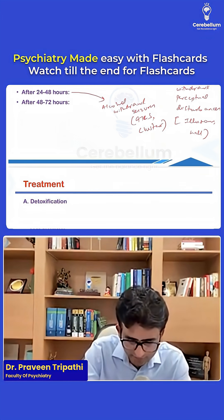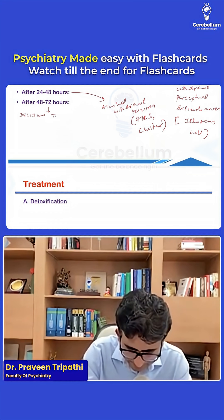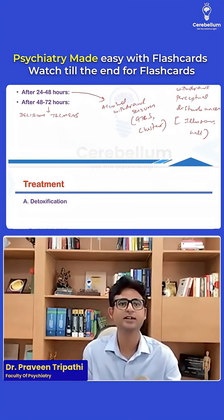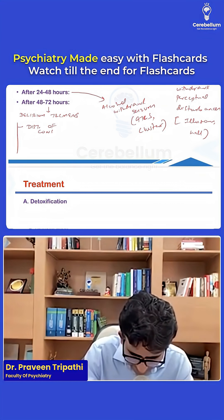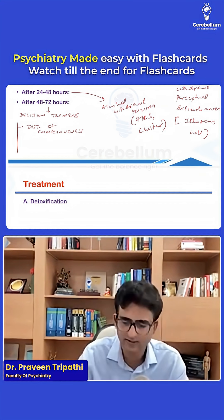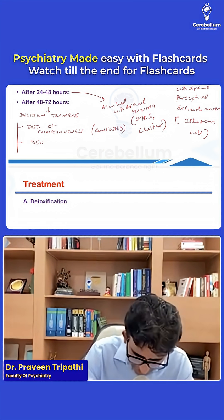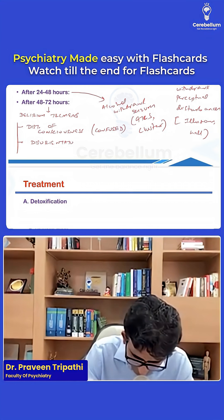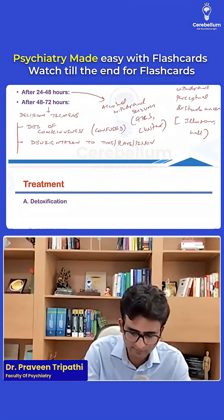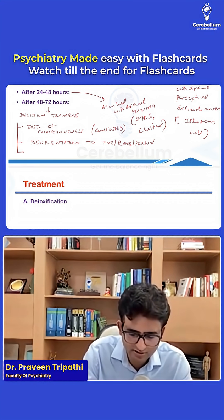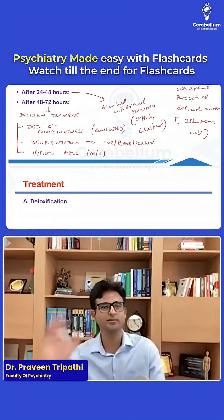After 48 to 72 hours, we can have the most dangerous complication called delirium tremens. Delirium tremens is characterized by a triad of disturbance of consciousness — in the exam, the patient may appear confused — disorientation to time, place, and person, and perceptual disturbances like hallucinations, most commonly visual hallucinations. If you see this triad, you should immediately go for DT.